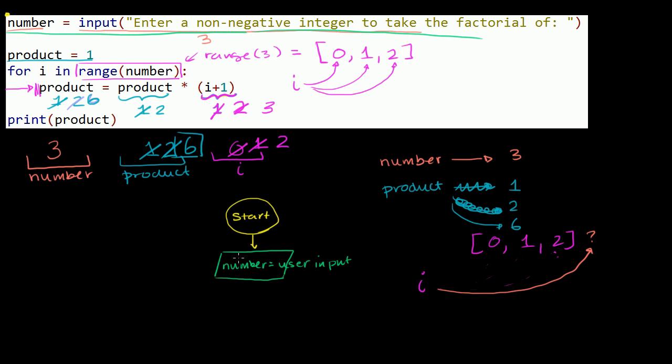We're assigning number as the user input. Then the next thing we do is just a straight up operation. We just set product to be equal to 1. So we just set, and there we just do that in a rectangle. Product equals 1.